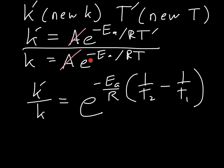We have to subtract the exponents from the top since we're dividing this by that. So we end up with 1 over T2 minus 1 over T1.